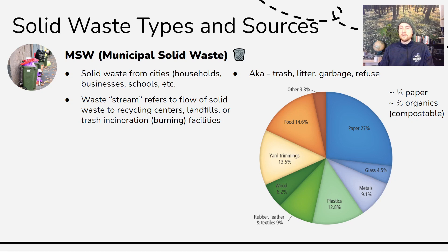About a third of the waste stream is paper, which is recyclable. When we look at what actually ends up in landfills, about a third is paper. Then about two-thirds of it is organic — things like food waste or yard trimmings — so this is compostable. This is important because it represents a huge potential to reduce our MSW stream by recycling and composting this organic matter, which can be broken down by microbes in a process called decomposition.